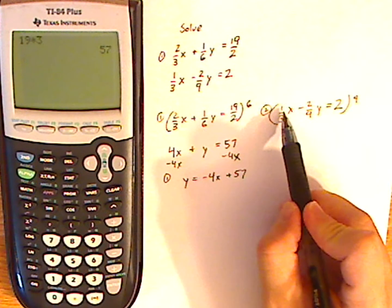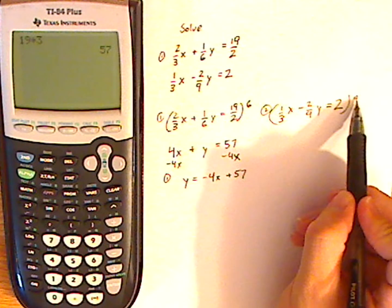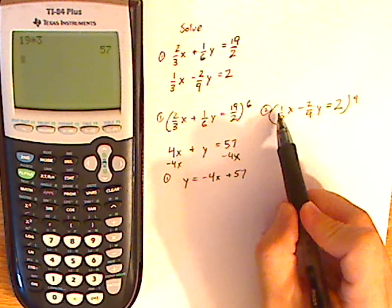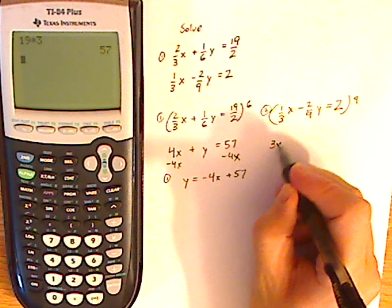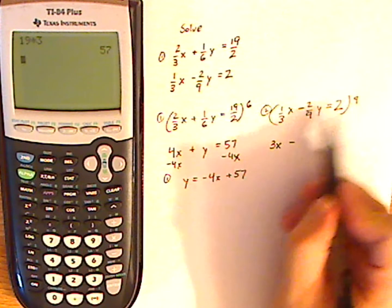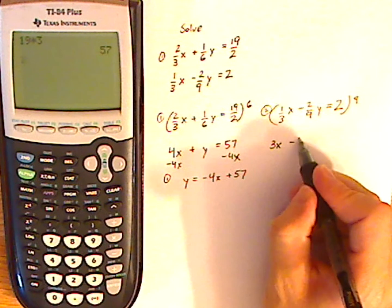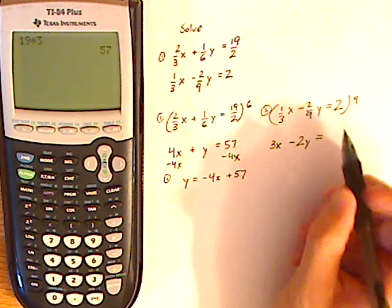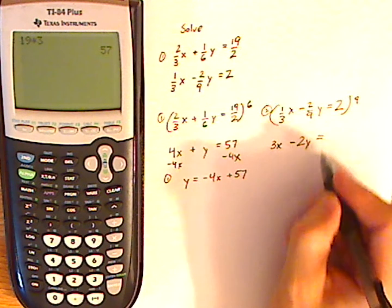So 9 times 1/3, the 3 is going to cancel out the 9, leaving me with 3, so it's 3 times 1, which is 3x, minus. The 9s cancel out there, so it's just -2y equals 9 times 2, which is 18.